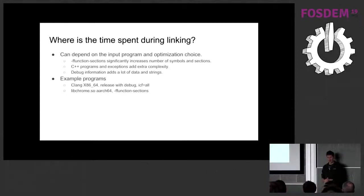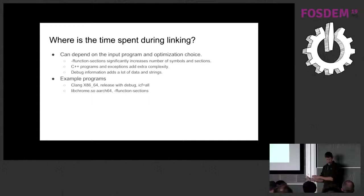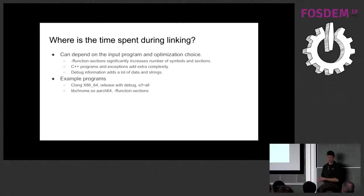Different programs hit different stages of the linker. For example, if you do f-function-sections, which compiles every function in its own section, that can multiply the number of sections the linker has to deal with by ten. Debug data adds a huge amount of generally quite simple information to process but can affect various different points of link time. C++ programs are generally more challenging to link than C due to the extra facilities they use.